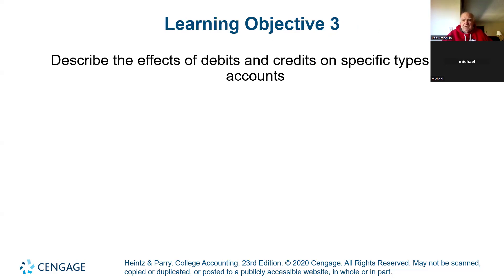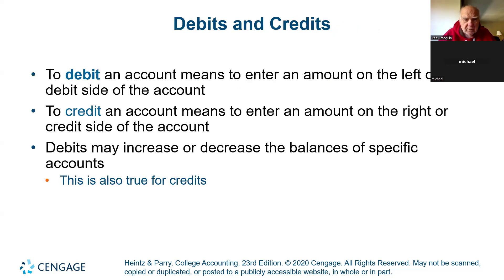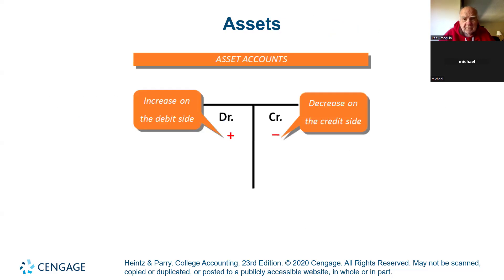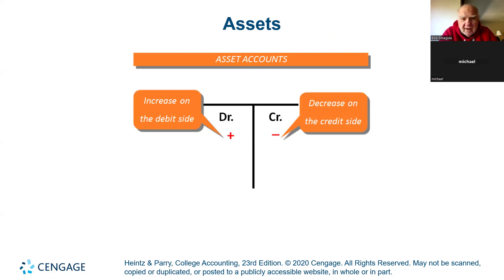Let's describe the effects of debits and credits on specific account types. Debiting an account means you put it on the left; crediting, you put it on the right. A debit could be an increase or a decrease; a credit could be an increase or a decrease. Here we start. Rule number one: Assets. Assets equal liabilities plus equity.